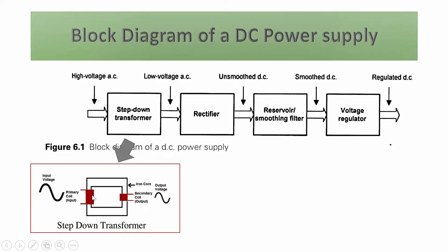In a transformer there is a primary coil and a secondary coil. The number of turns in the primary coil is N1 and in the secondary coil is N2. In a step-up transformer, N1 is less than N2. In a step-down transformer, N1 is greater than N2, meaning more primary turns than secondary turns. The step-down transformer decreases the voltage, converting high voltage AC to low voltage AC.